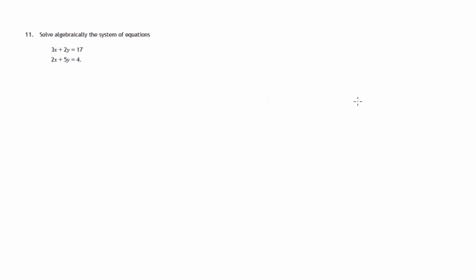This is question 11 from paper 1 of the 2015 National 5 SQA Maths Exam. Simultaneous equations. 3x plus 2y equals 17. 2x plus 5y equals 4.